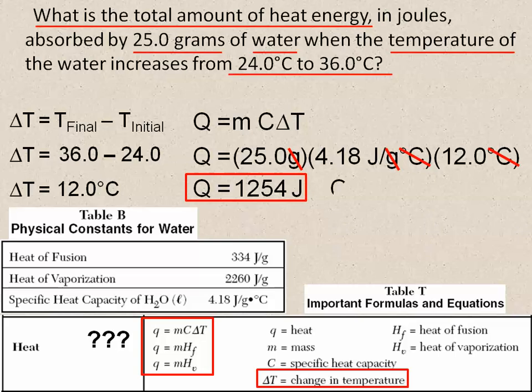Now if they wanted the answer expressed to the correct number of significant figures, it would be 1250 joules. To understand why, or if you simply need help understanding significant figures, please click the link below to take you to three short videos covering how to identify, add and subtract, and multiply and divide with significant figures.